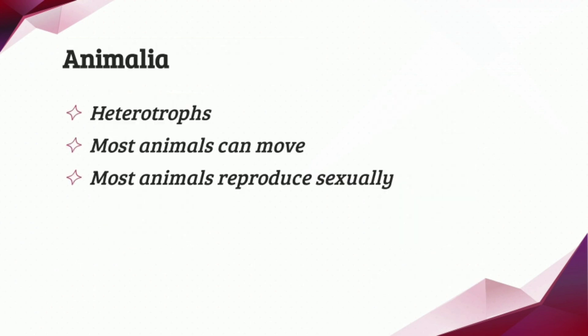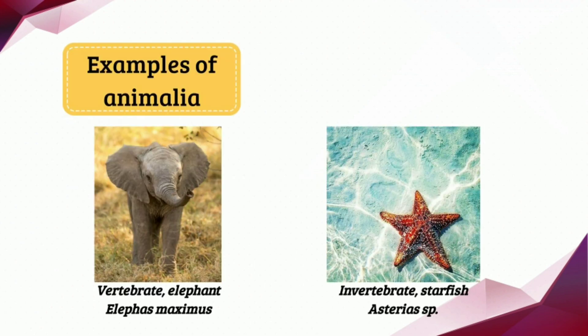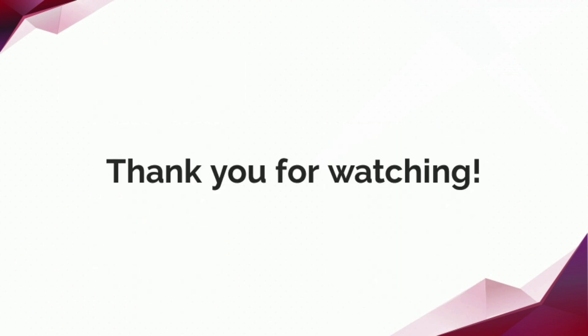Last but not least, we have the Animalia kingdom. Animalia kingdom are heterotrophs. Most animals can move and reproduce sexually. Examples of the Animalia kingdom are the elephant for vertebrates and the starfish for invertebrates. Thank you so much for watching and stay safe everyone. See you soon!